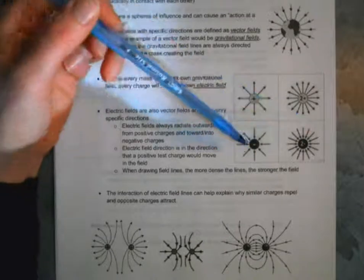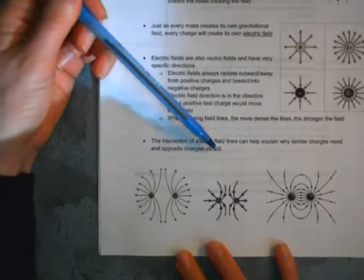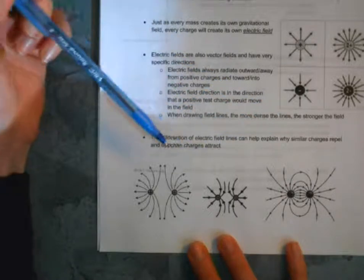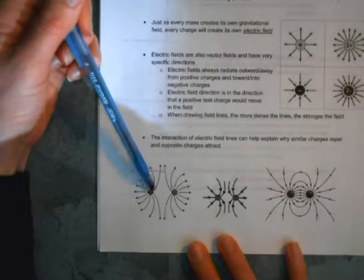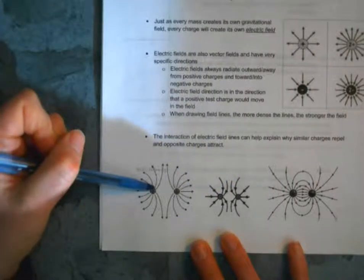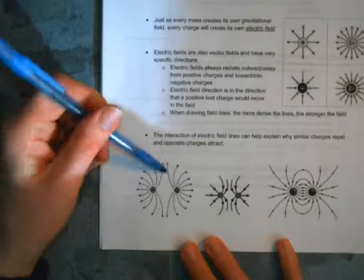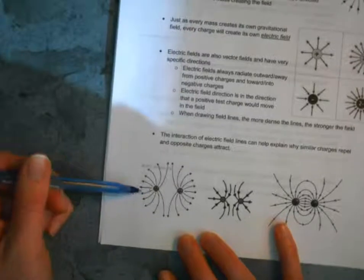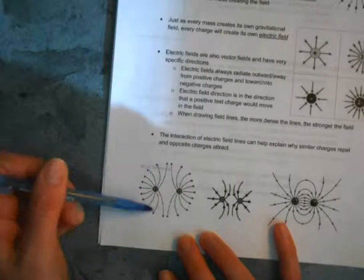In reality, most of the time there are going to be multiple charges interacting, so we need to understand how the field lines behave due to attraction or repulsion between charges. With like charges, due to repulsion the field lines are pushed apart from each other. On the side of one positive charge facing the other, the field lines start to be pushed away by the other positive charge — we see that repulsion.